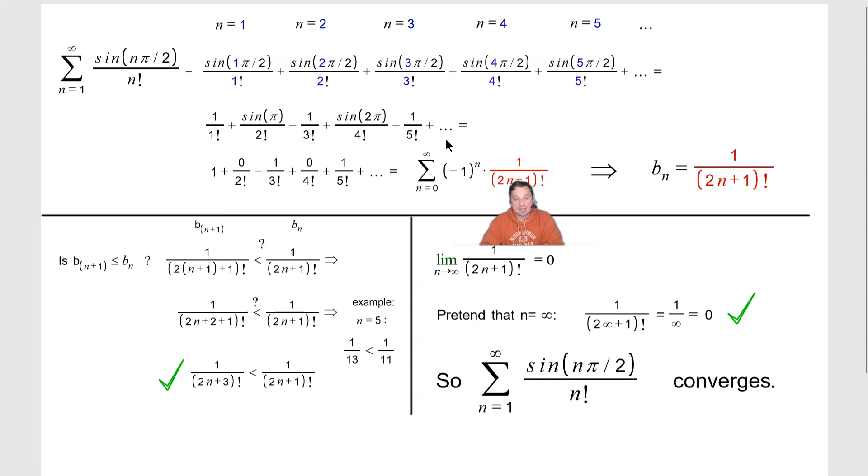So now because I do have a series and the signs change, I'm going to think about this in the context of alternating series. So what is my b sub n here? b sub n is basically then 1 over 2n plus 1 quantity factorial.